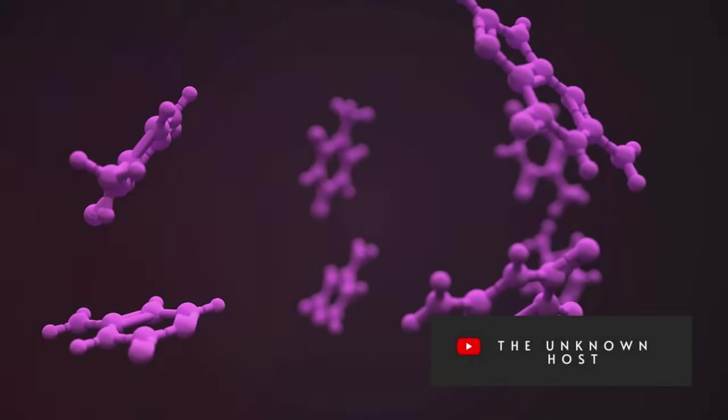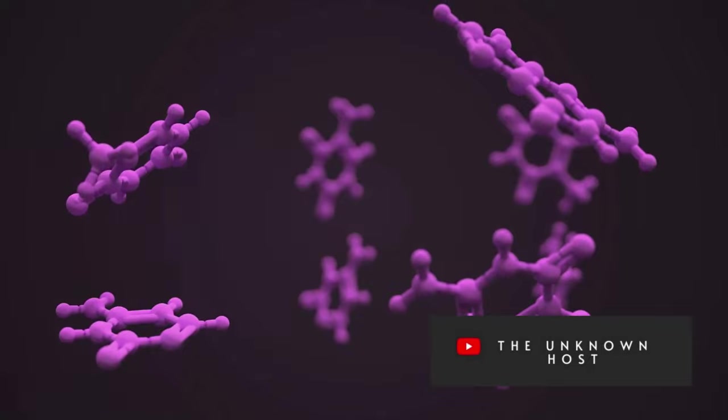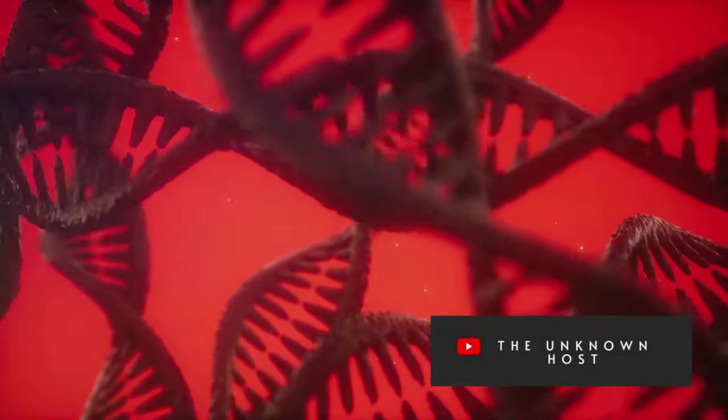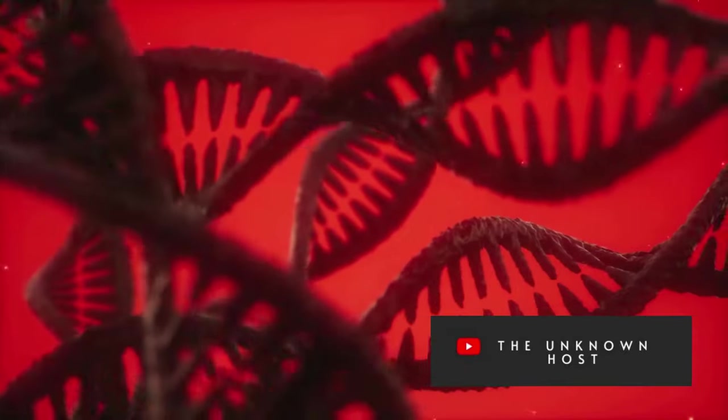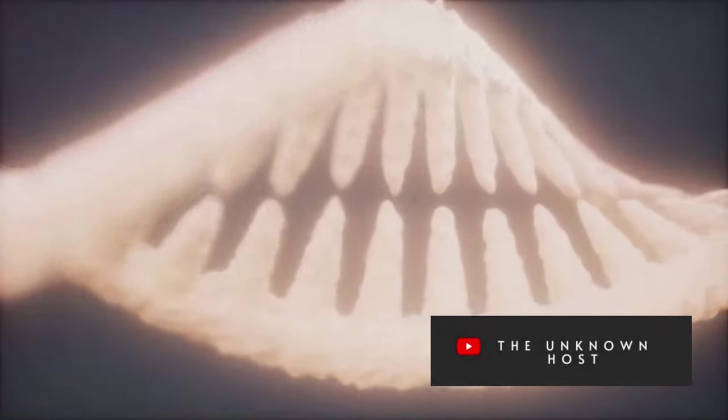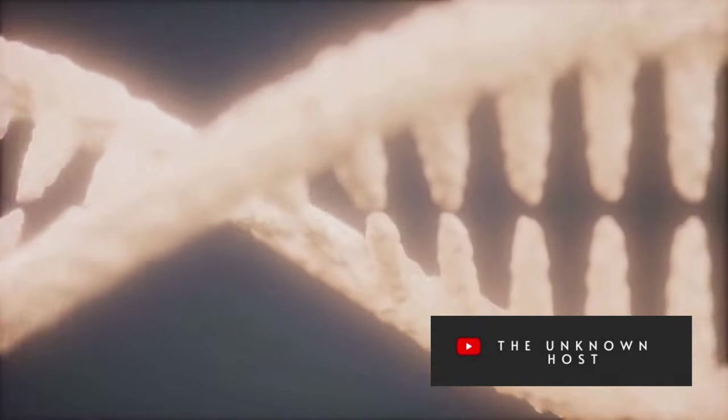Now let's talk about these rungs. There are four different nitrogenous bases in DNA: adenine, thymine, cytosine, and guanine. They're often abbreviated as A, T, C, and G. These bases pair up in a very specific way to form the rungs of the DNA ladder. Adenine always pairs with thymine, and cytosine always pairs with guanine. This is known as base pairing. Why